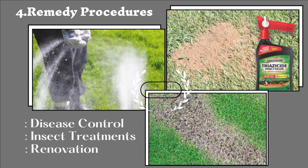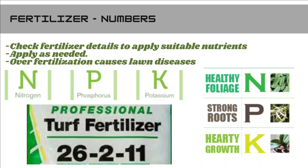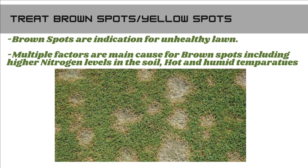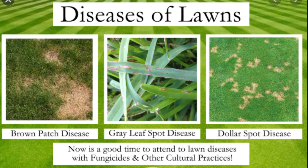The fourth topic of lawn maintenance is remedy procedures, which includes disease control, insect treatments, and renovation. Balanced nutrition and regular inspection for diseases is good practice to maintain a healthy lawn. There are ways lawn diseases can develop, especially during summer. Hot and humid summer conditions combined with high nitrogen levels in the soil are the perfect combination of factors for the development of brown patch disease.